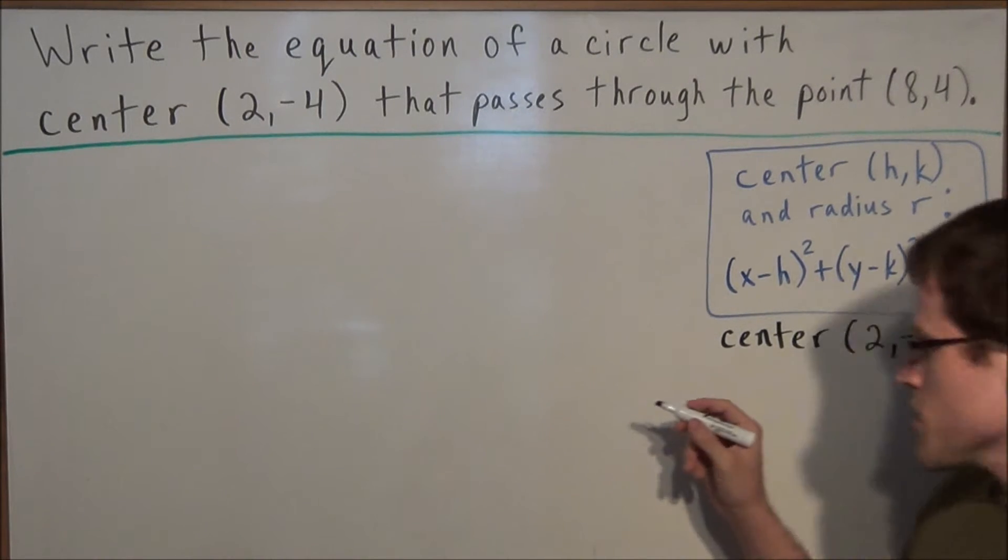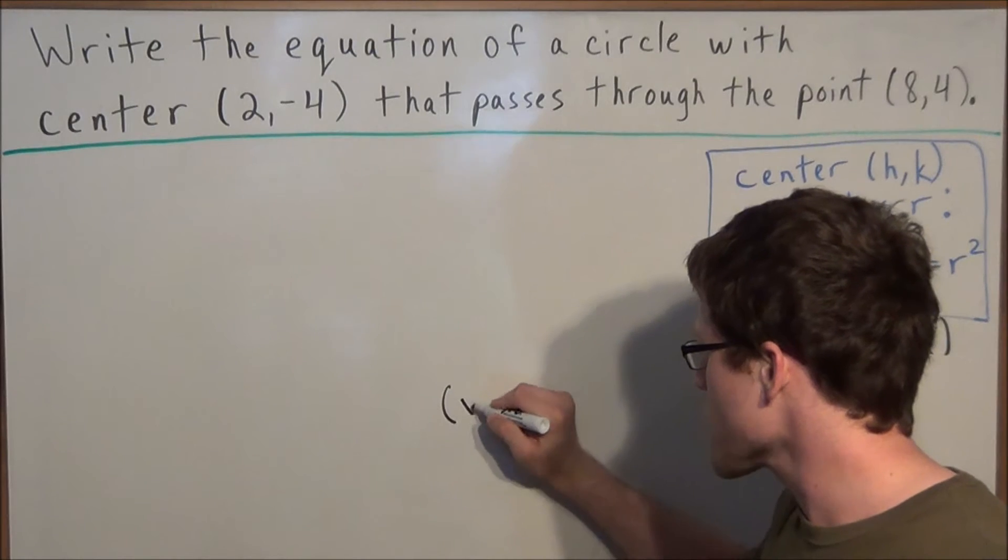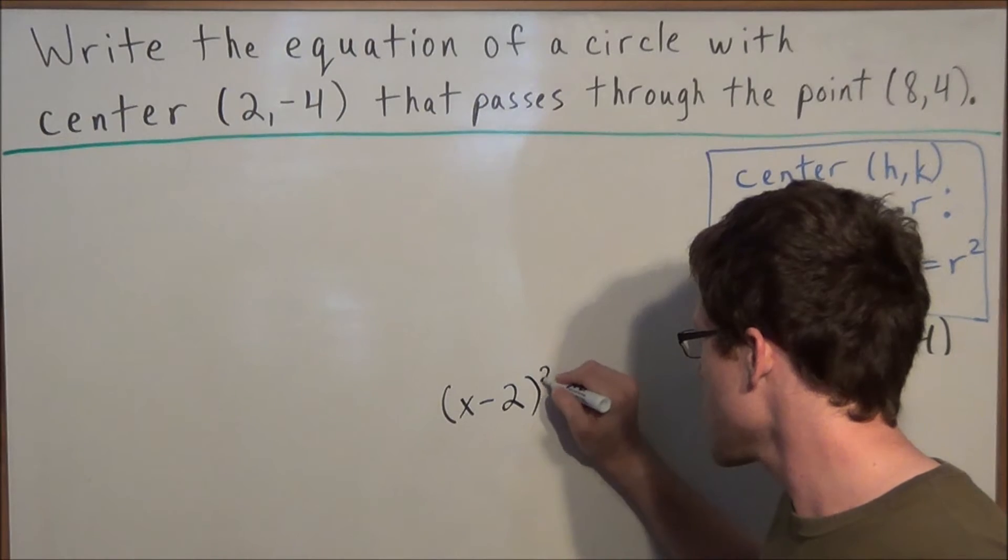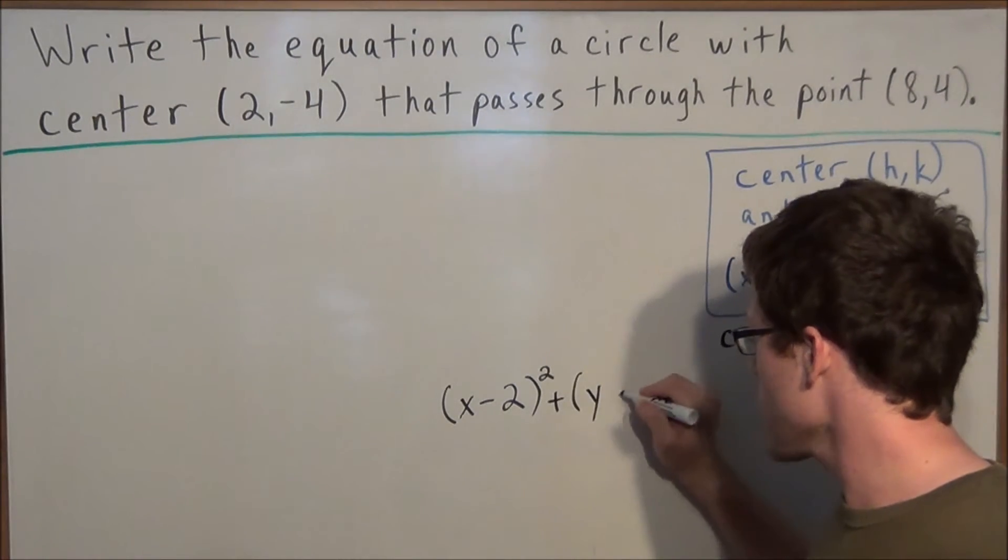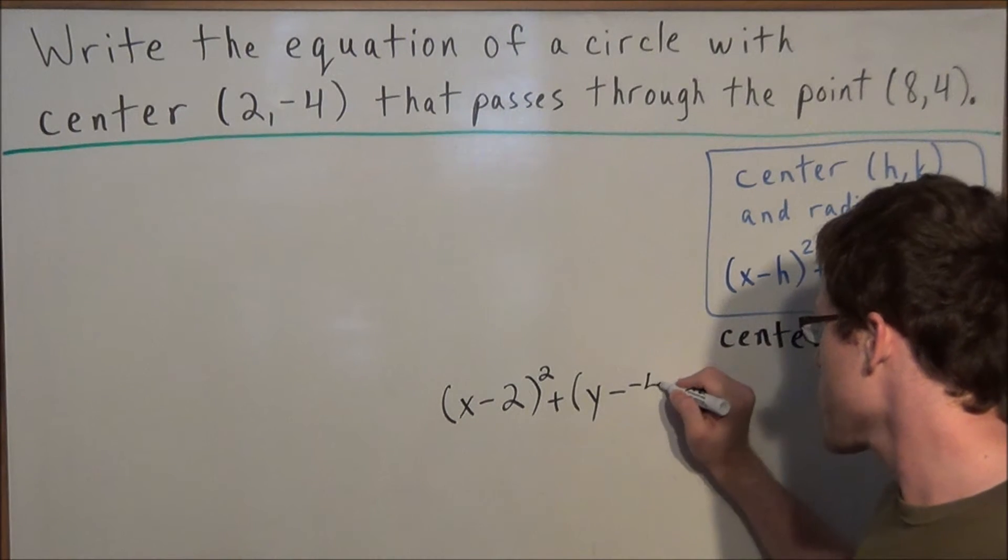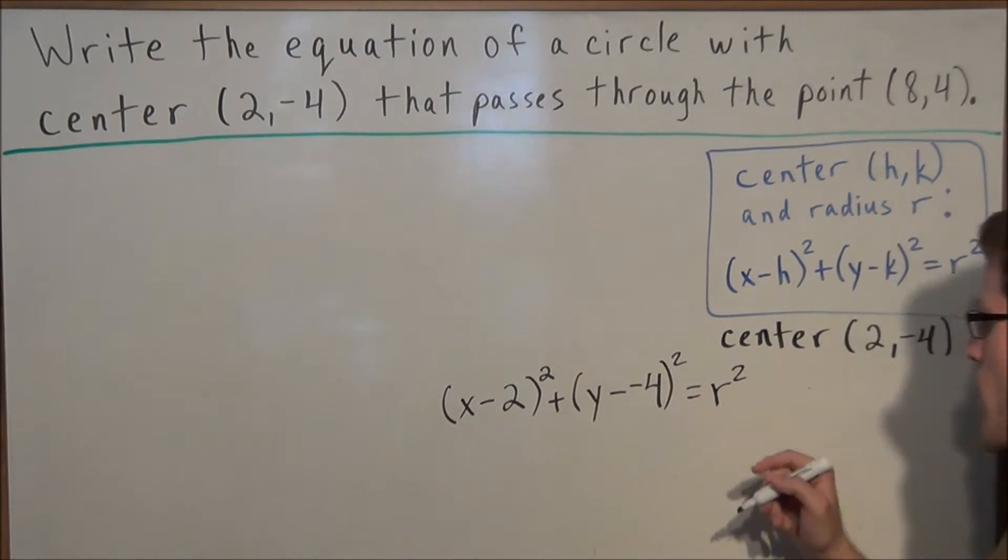So when we're writing our answer here, notice all we need to do is instead of X minus H, H is going to be 2 in this case and we're squaring X minus 2. And then we're doing Y minus K and K is equal to negative 4. And this quantity is being squared and remember this is equal to the radius squared.